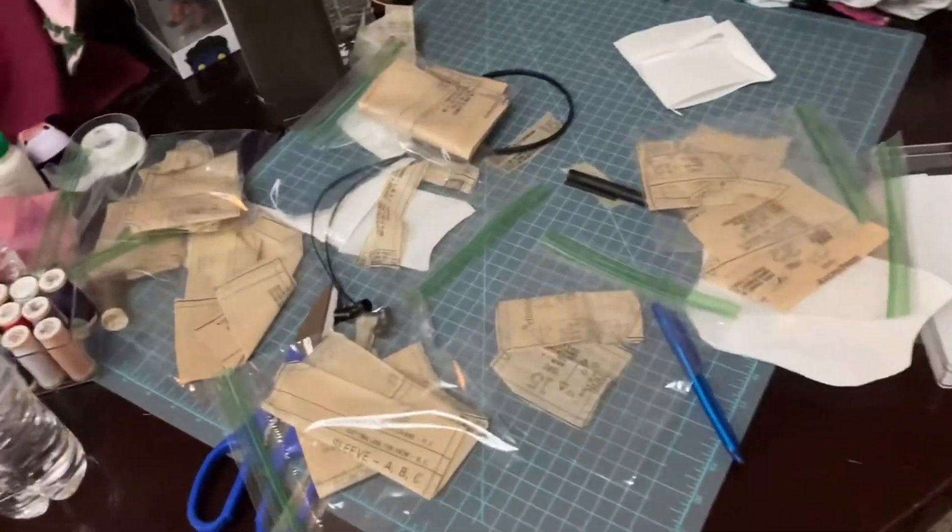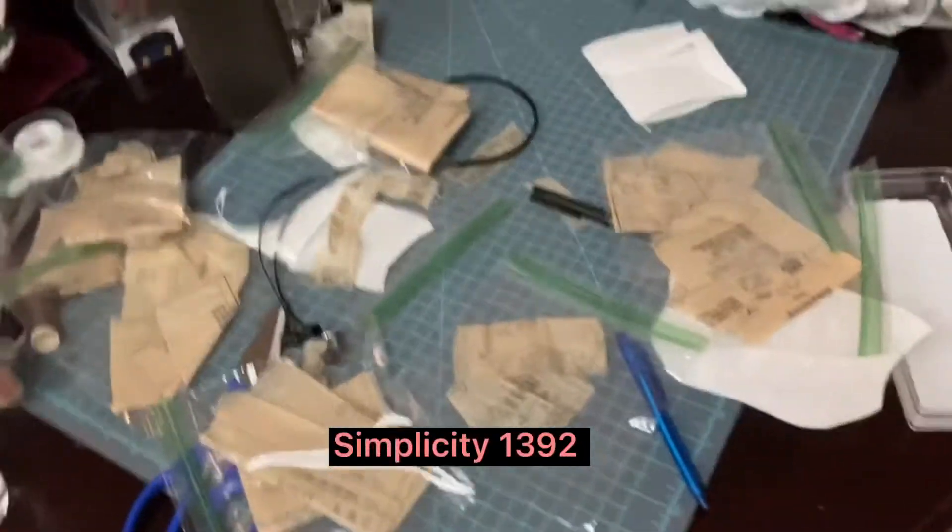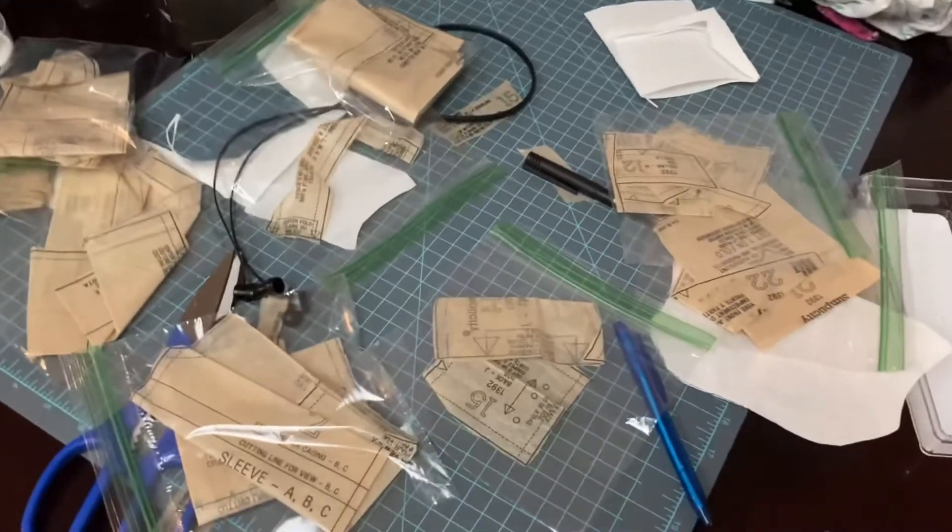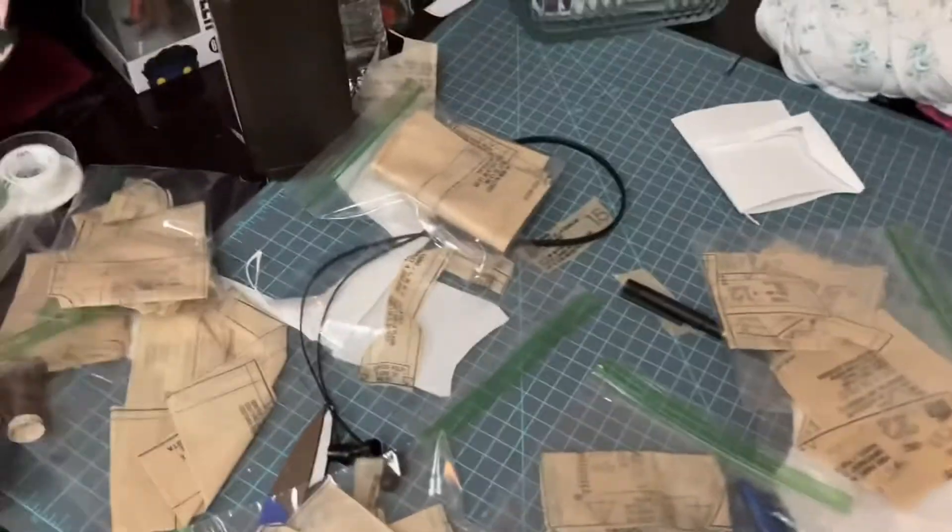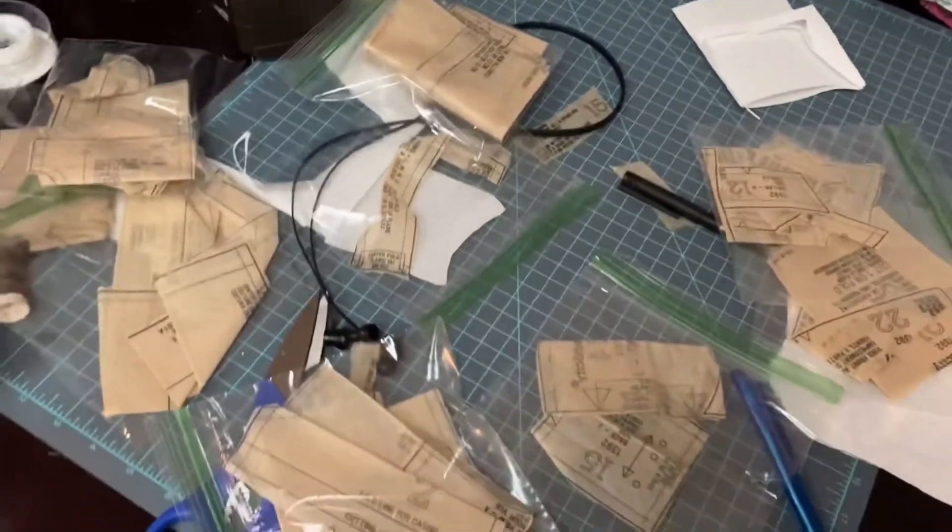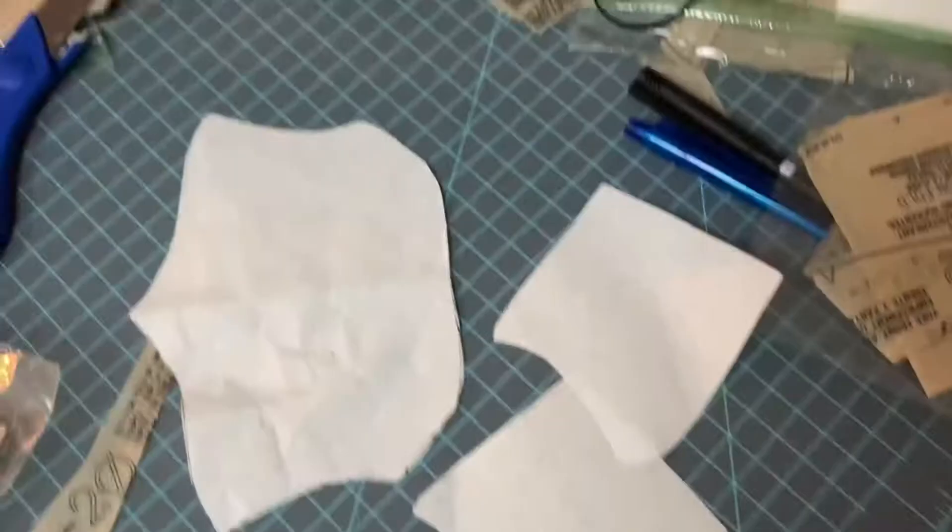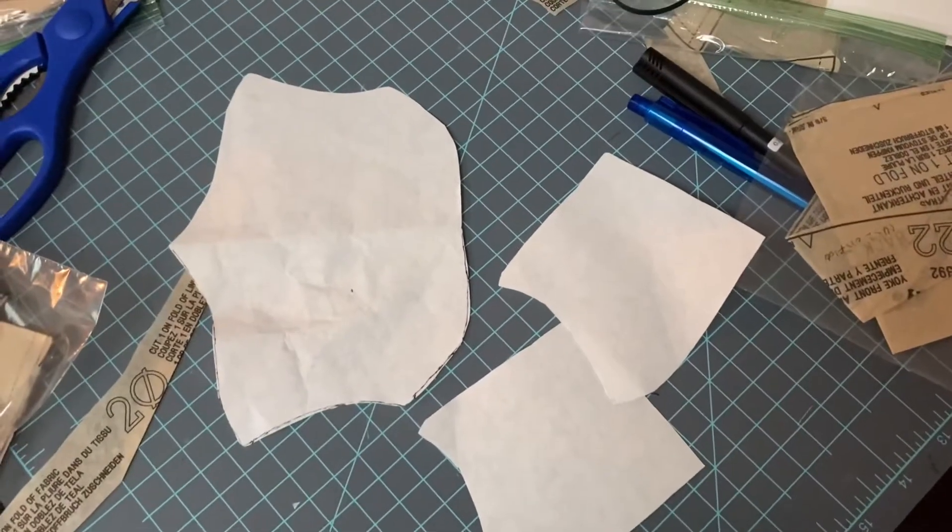In this video I'm going to be making a corset from my discontinued Simplicity pattern. I am using this for my 18 inch Our Generation doll. Here's the pieces I'm going to be using.